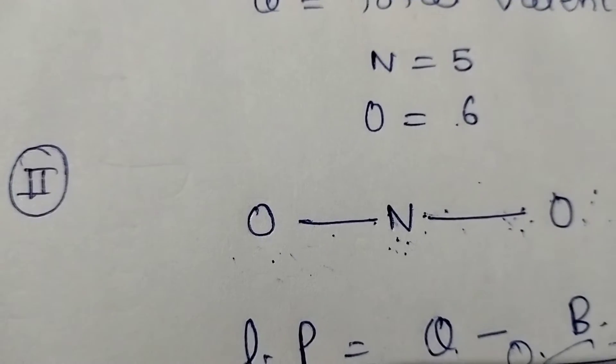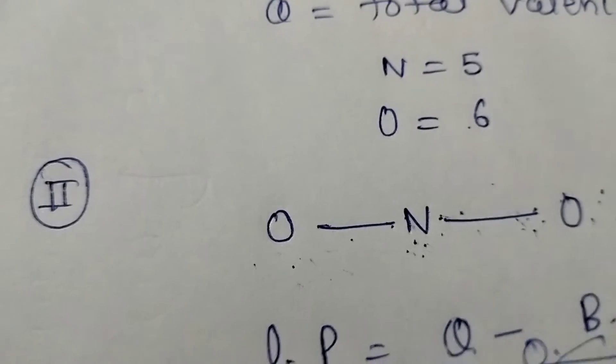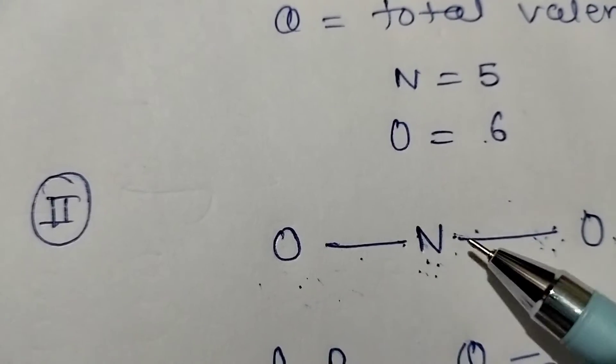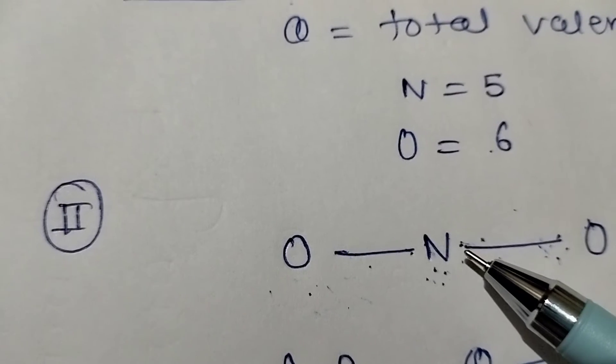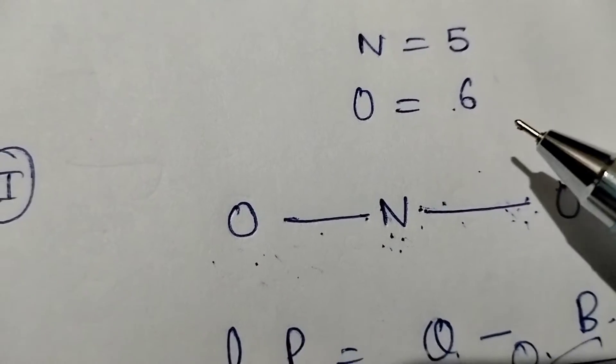Now, there's a little bit confusion about how will we calculate it. How many bonds are there and total number of bond pair?